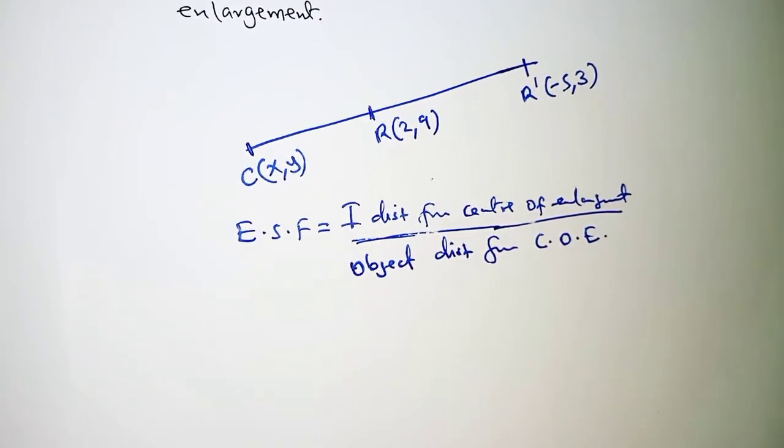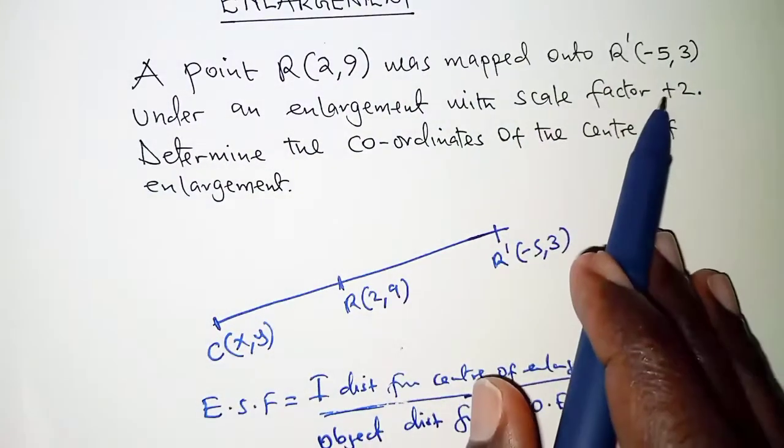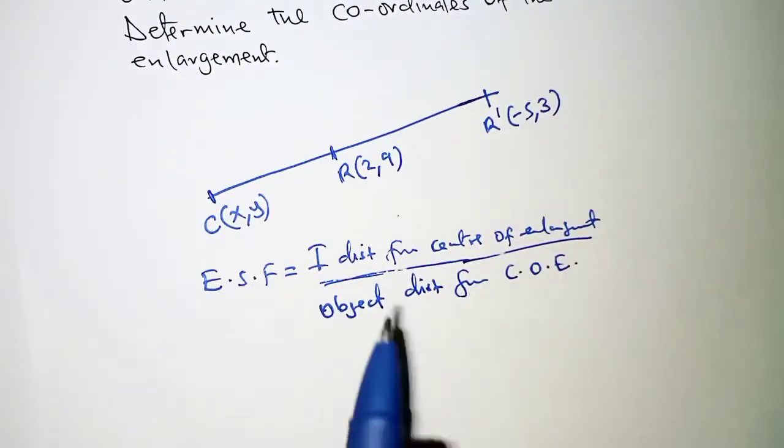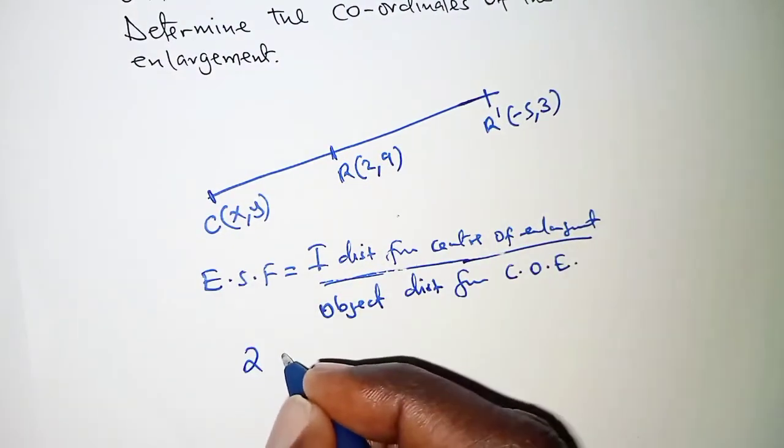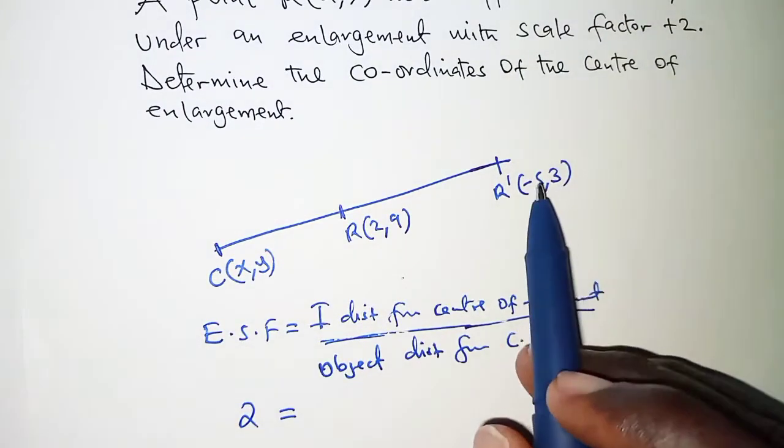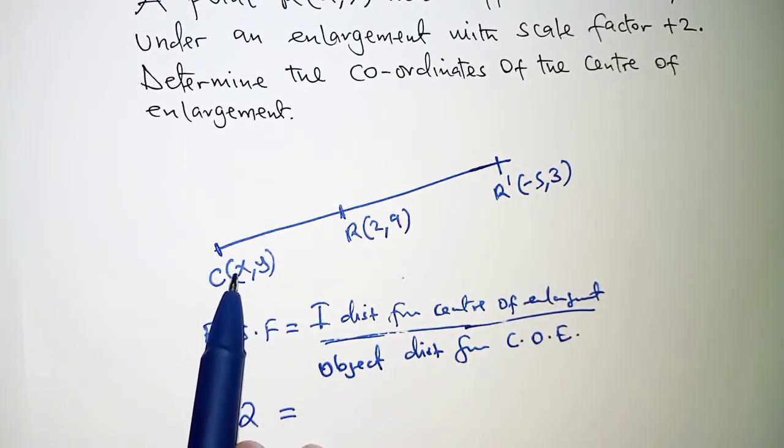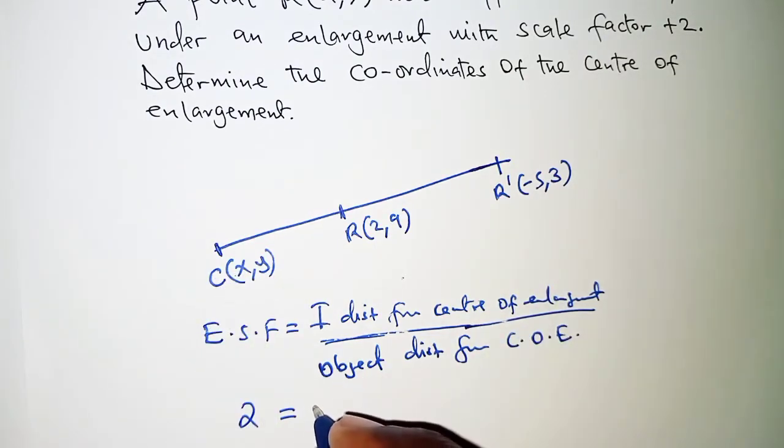For this particular case we are told that the enlargement scale factor is positive 2. So we will have 2 is equal to the image, we have -5 from -5 up to X. We'll have a difference of -5 minus X.